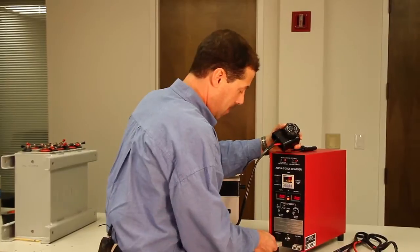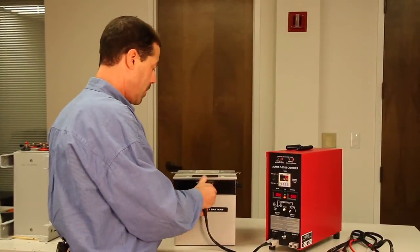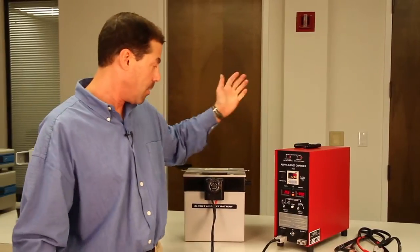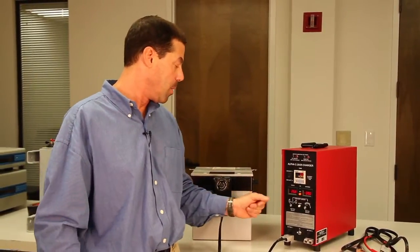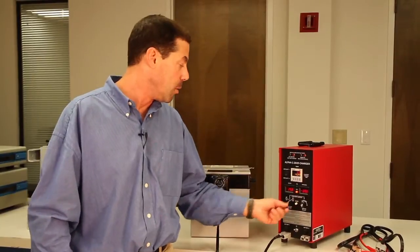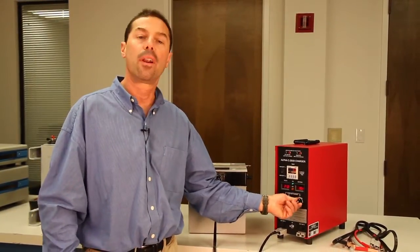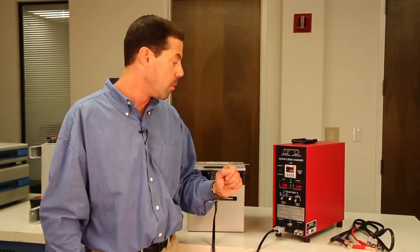To connect the unit, it's very simple. For basic operation, if you want to do a lead acid 24 volt battery, all you would have to do is set it to 24 volts, start it, set your current, and away you go.